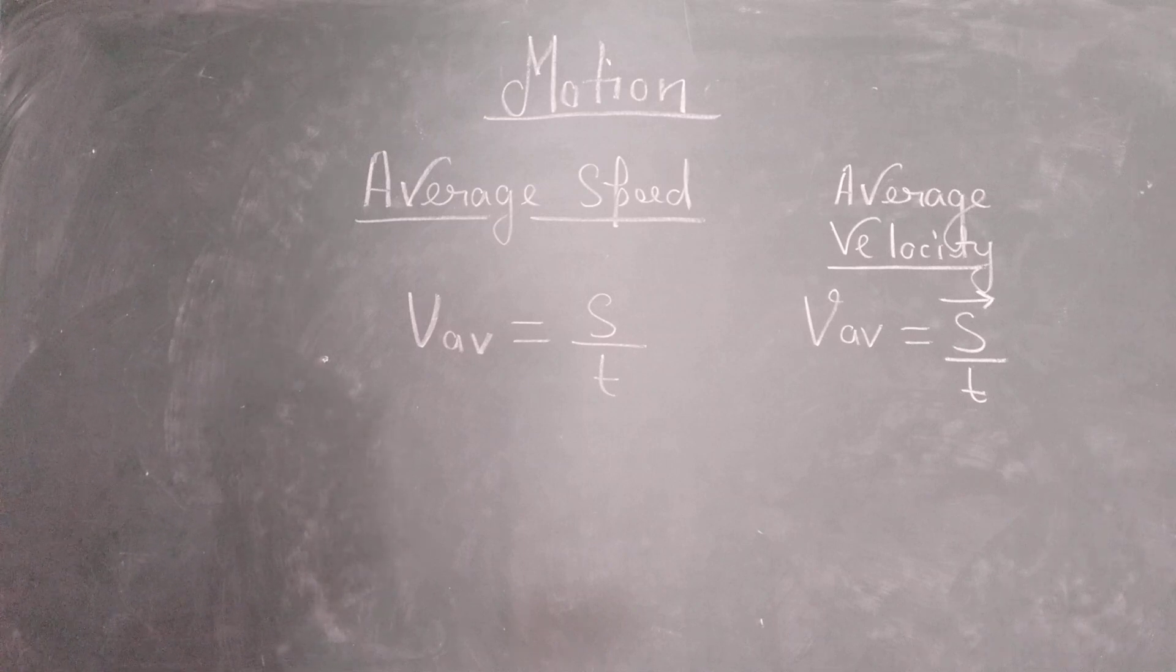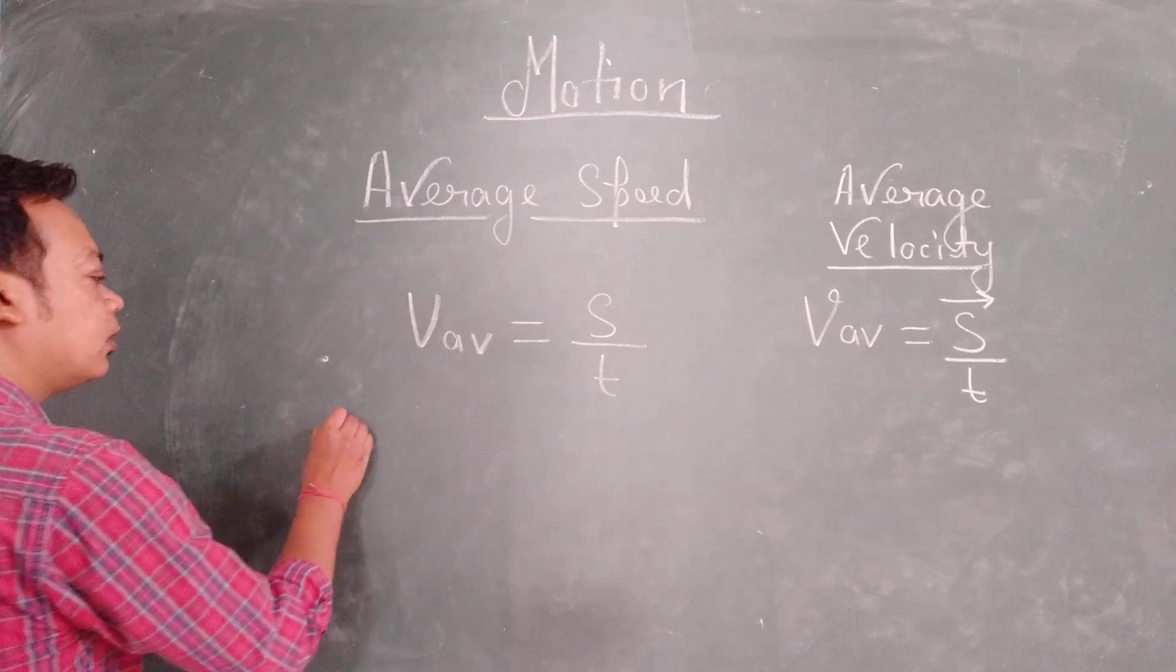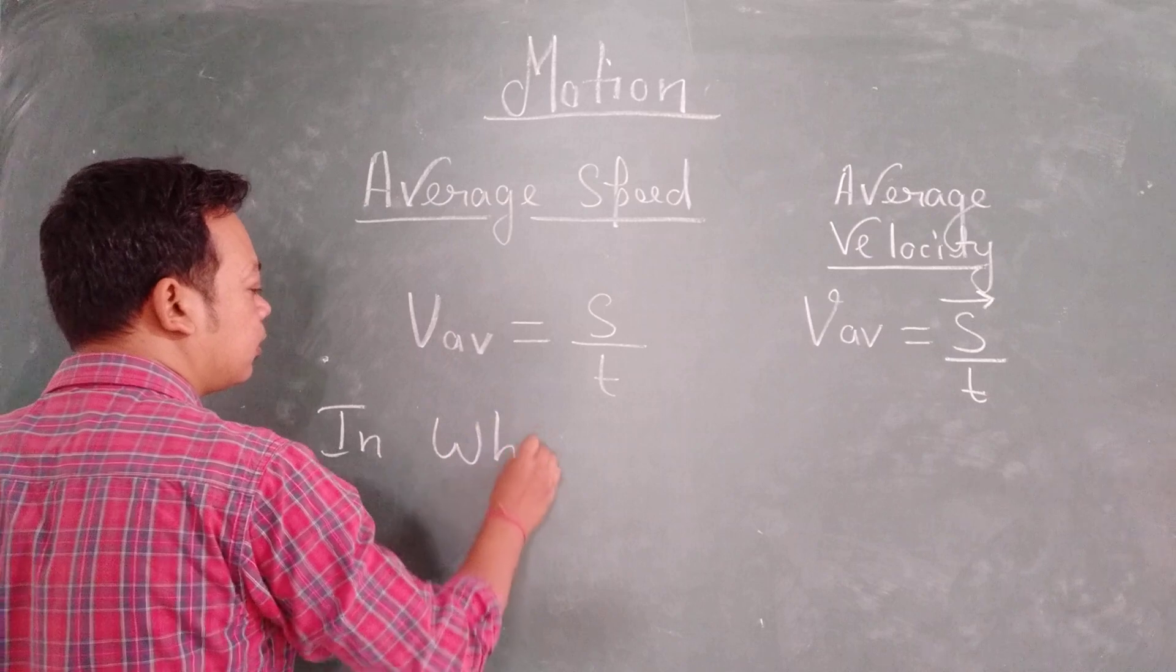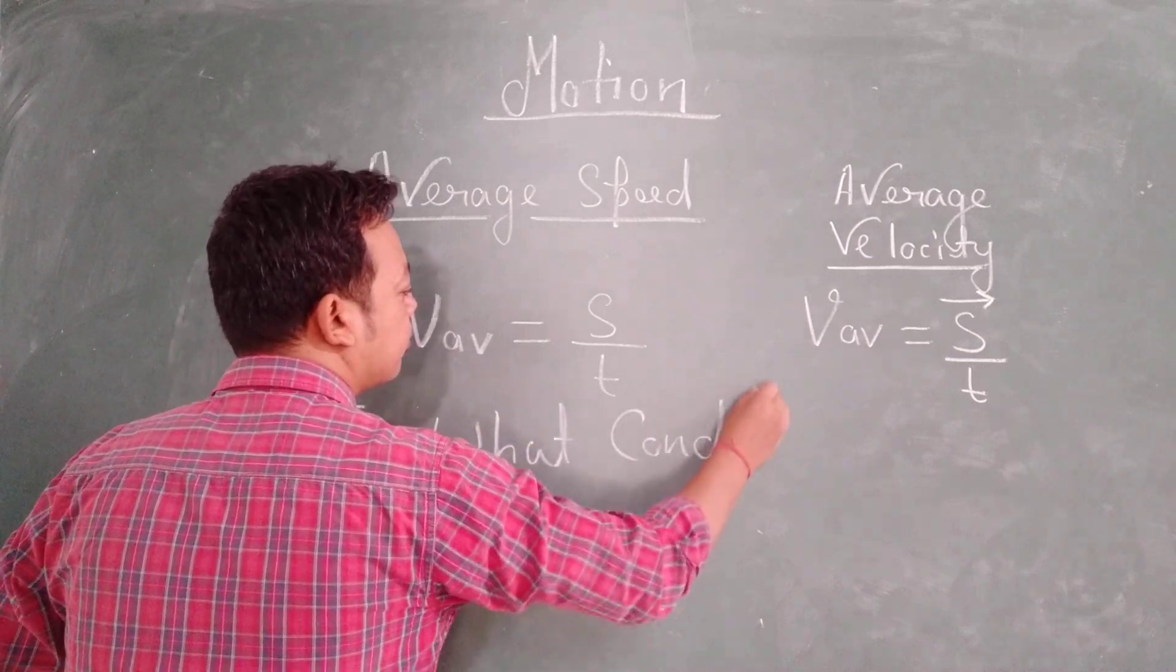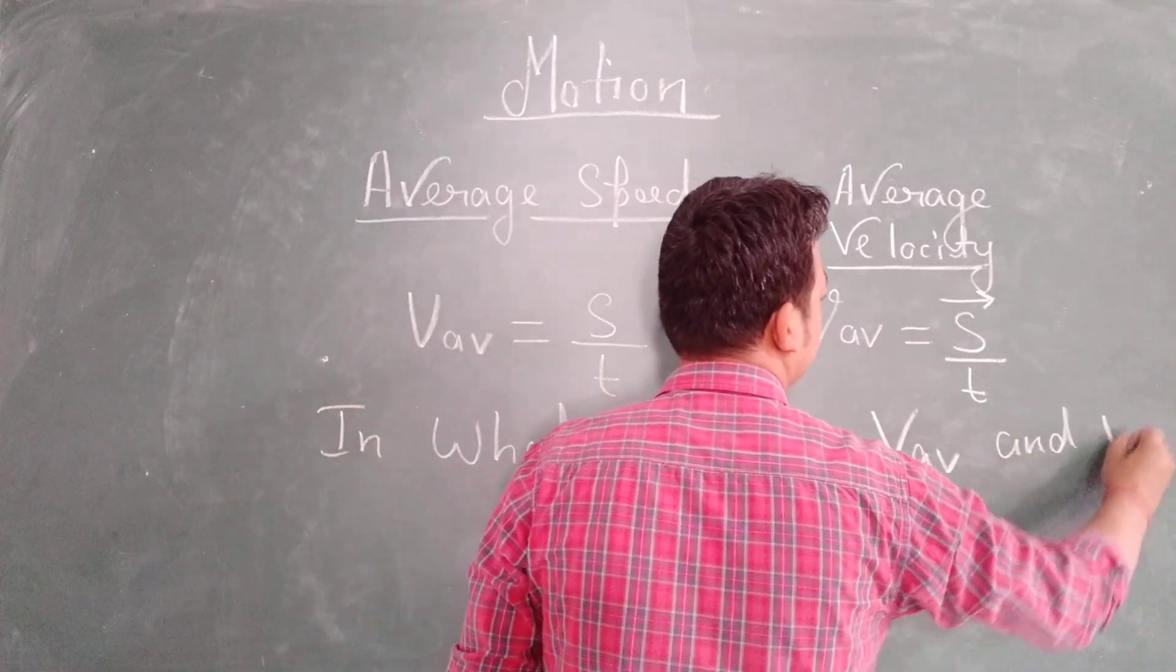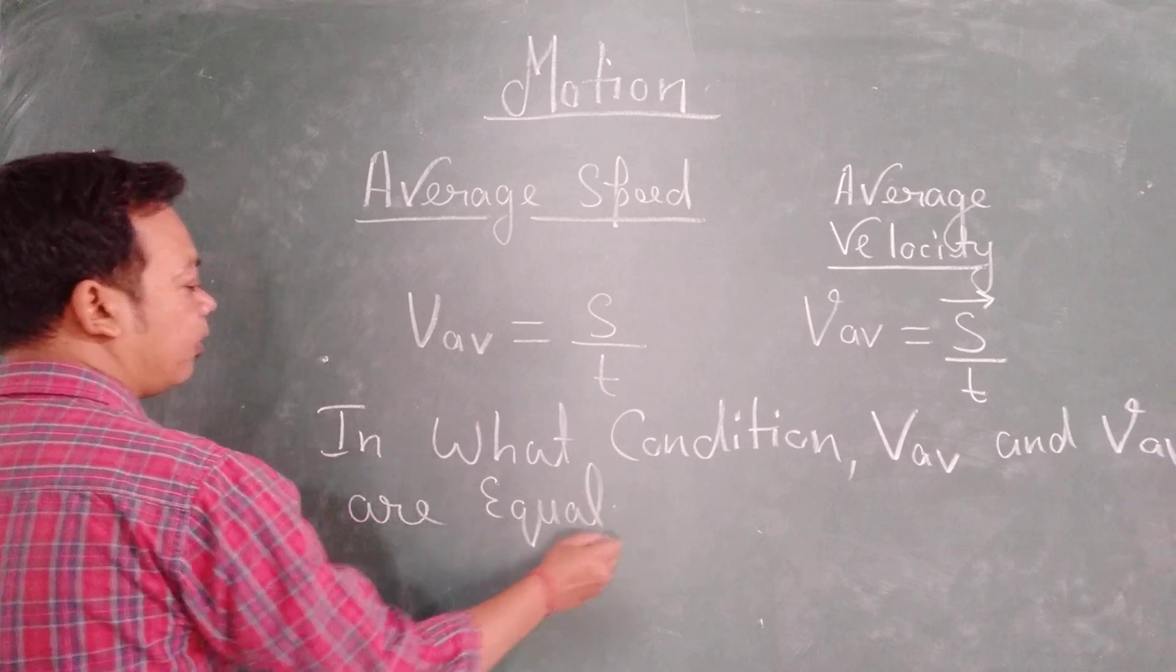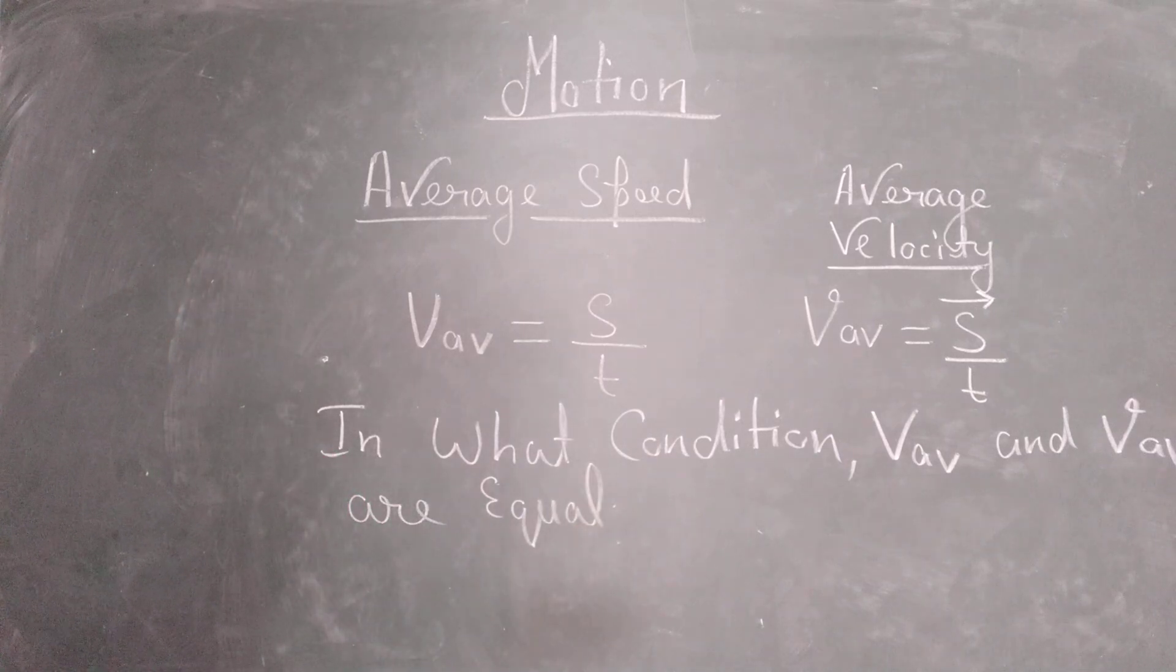Now let us solve a problem related to this question. When will you say that average velocity and average speed are equal? In this question we need to consider a situation where initial position is not the same as final position.